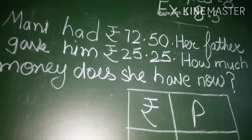Our next exercise is 8.5 that is same. But the only difference is that in this exercise statement sums are given. The statements are already made. We just have to put the rupees and paise under the perfect column. The first statement is Mani had 72 rupees and 50 paise. Her father gave her 25 rupees and 25 paise. How much money does she have now?